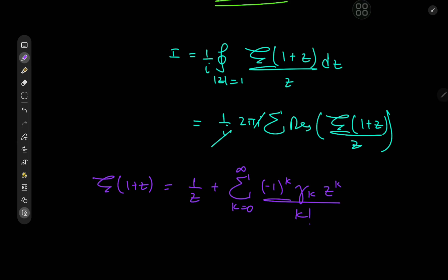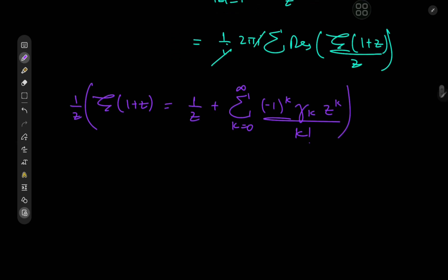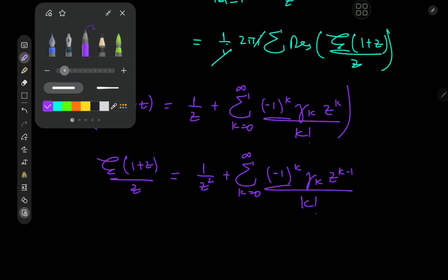And of course, we need to expand this by 1/z. So we have ζ(1+z)/z = 1/z² + Σ(k=0 to ∞)(-1)^k γ_k z^(k-1)/k!.